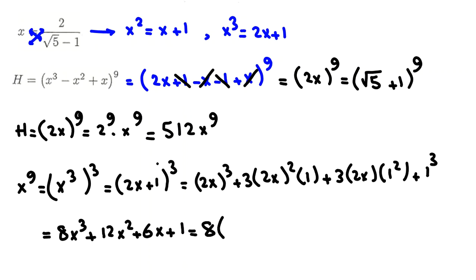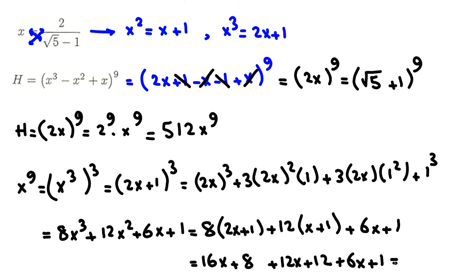Now I replace x cubed is 2x plus 1. 8 times 2x plus 1, plus 12 times x squared is x plus 1, plus 6x plus 1. Now the coefficient of x will be what? Let me write like this: 16x plus 8, plus 12x plus 12, plus 6x plus 1. So for x it will be 16 plus 12, 28 plus 6x, 34x. And 8 plus 12, 20 plus 1, 21. So we can say it will be, okay, we write here, it will be 512, x to the 9 is 34x plus 21.